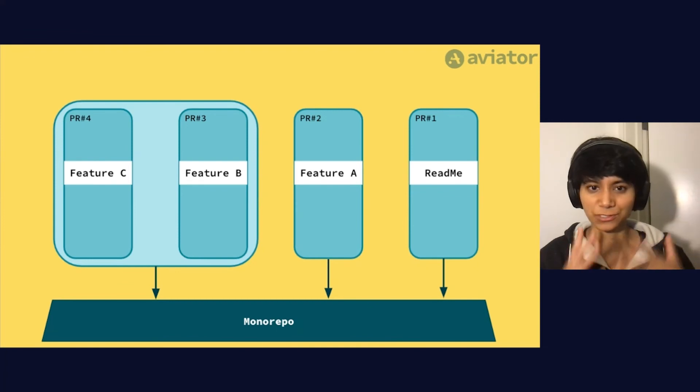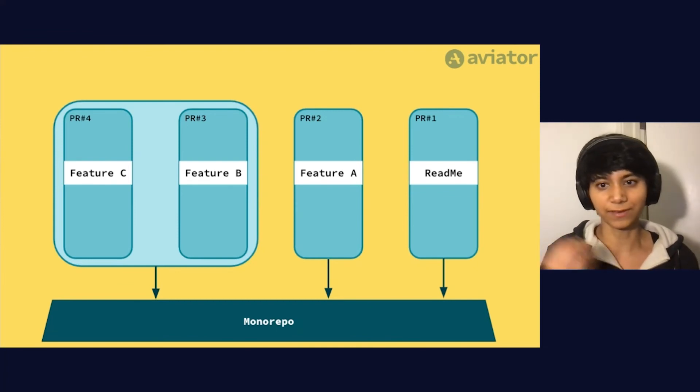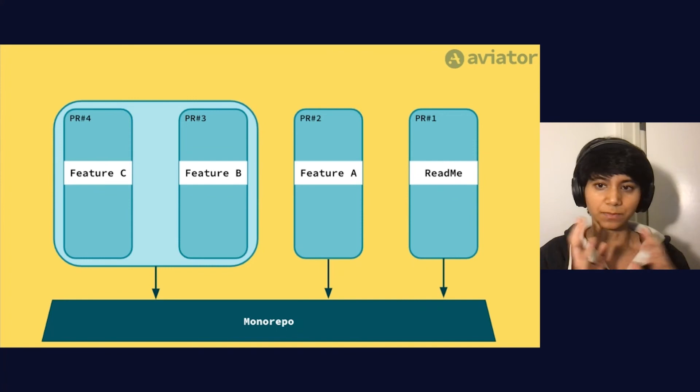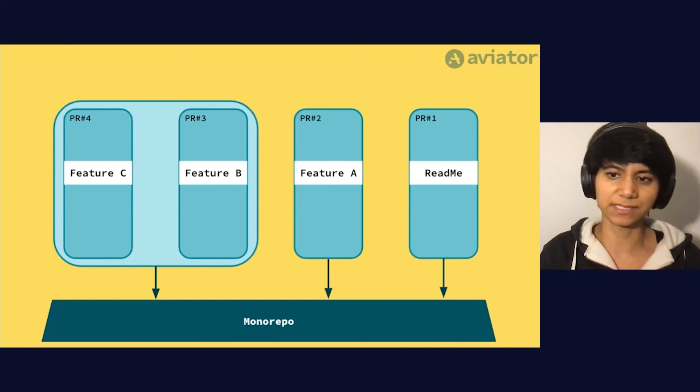Of course, you could take this to a whole other level. You could take all sorts of other signals into account while grouping these PRs into multiple queues, things like who wrote the PR, how often does this part of the code base get updated, stuff like that.